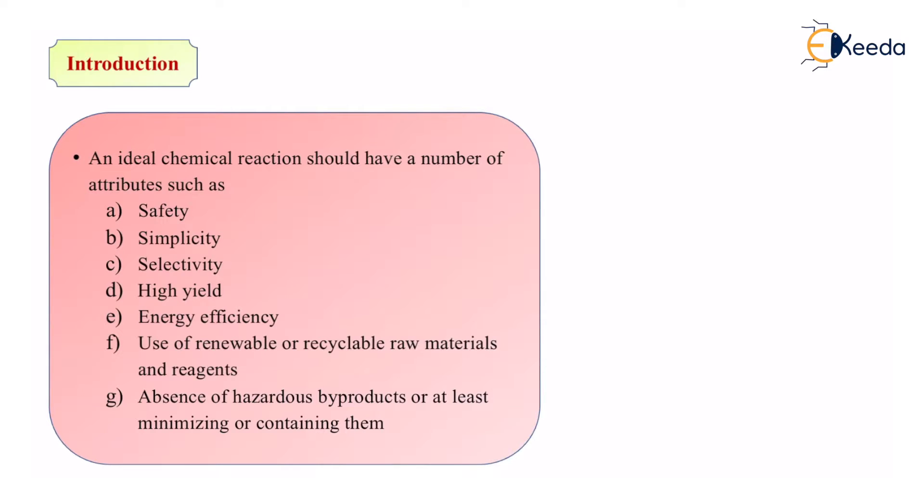Third is selectivity. What do we mean by selectivity? Selectivity means that a person who is doing it should select certain reactions which have proper attributes, the safest reactions or the most simple reactions. Fourth is high yield. Whenever we perform a reaction, it is to yield a purpose. Most of the reactions are performed so that we get certain products out of it. It is very important for us to have high yield. That means the products should be of high quantity.